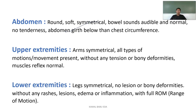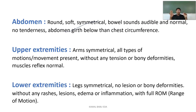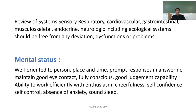Upper extremities: both arms should be symmetrical, all types of motion present, no tension or bony deformities, and muscle reflexes normal. Lower extremities: legs should be symmetrical with no lesions, bony deformities, edema, or inflammation, and full range of motion present. A review of systems — respiratory, cardiovascular, gastrointestinal, musculoskeletal, endocrine, and neurological — should all be free from any deviation or dysfunction for the person to be considered healthy.